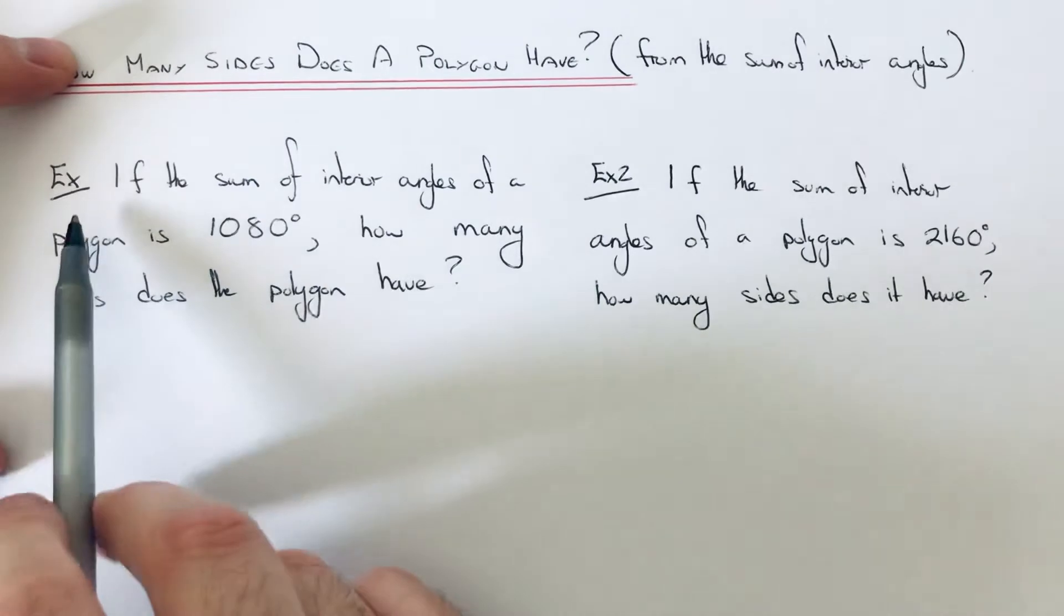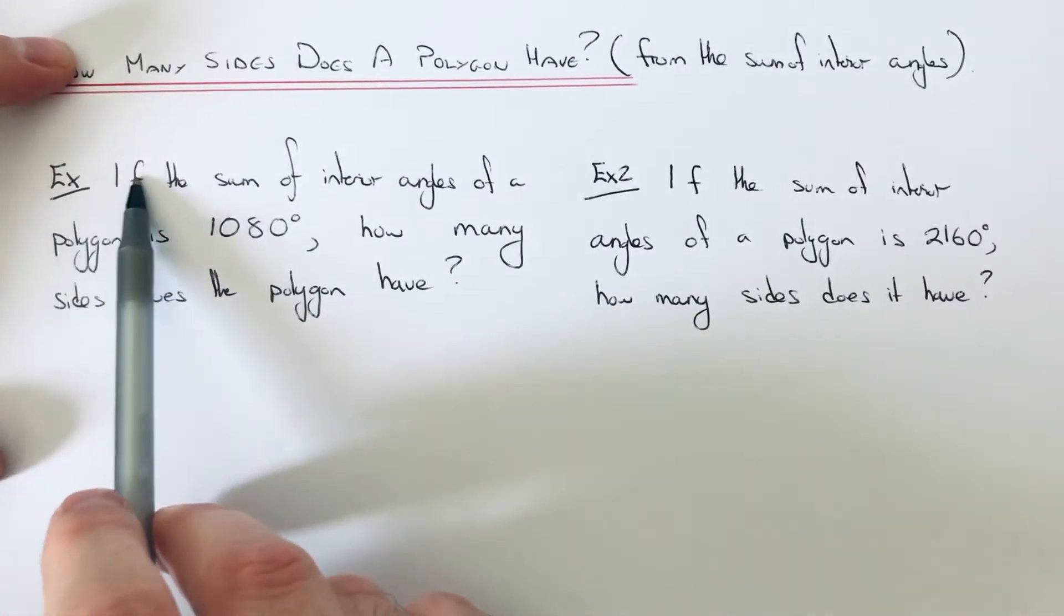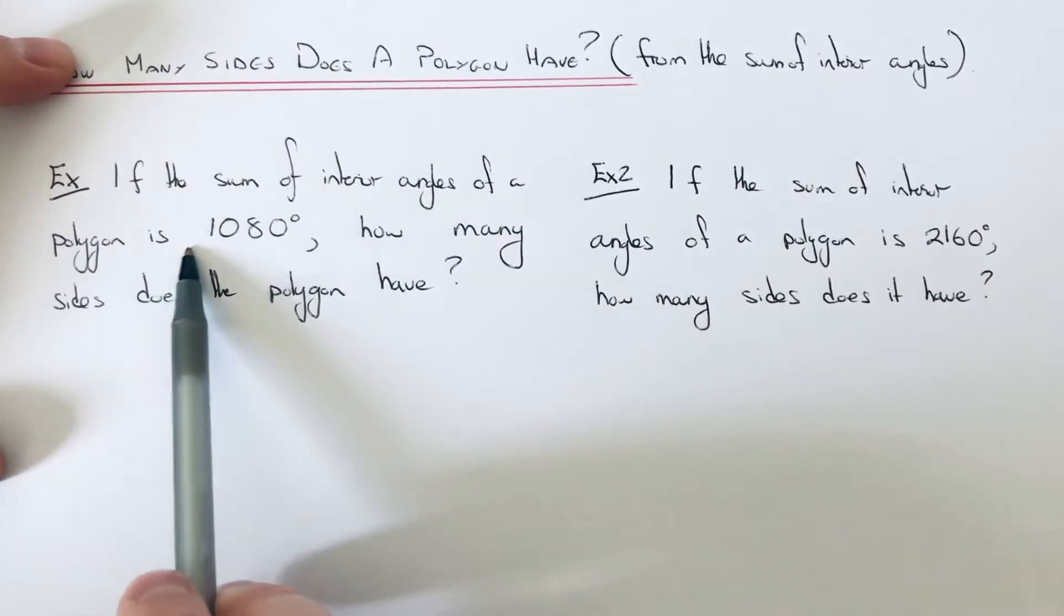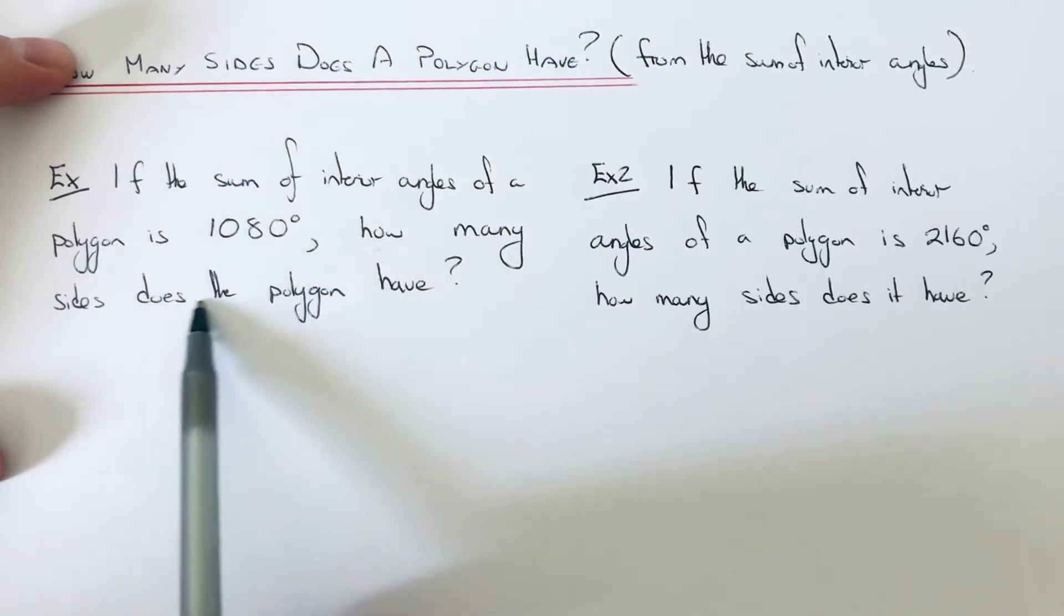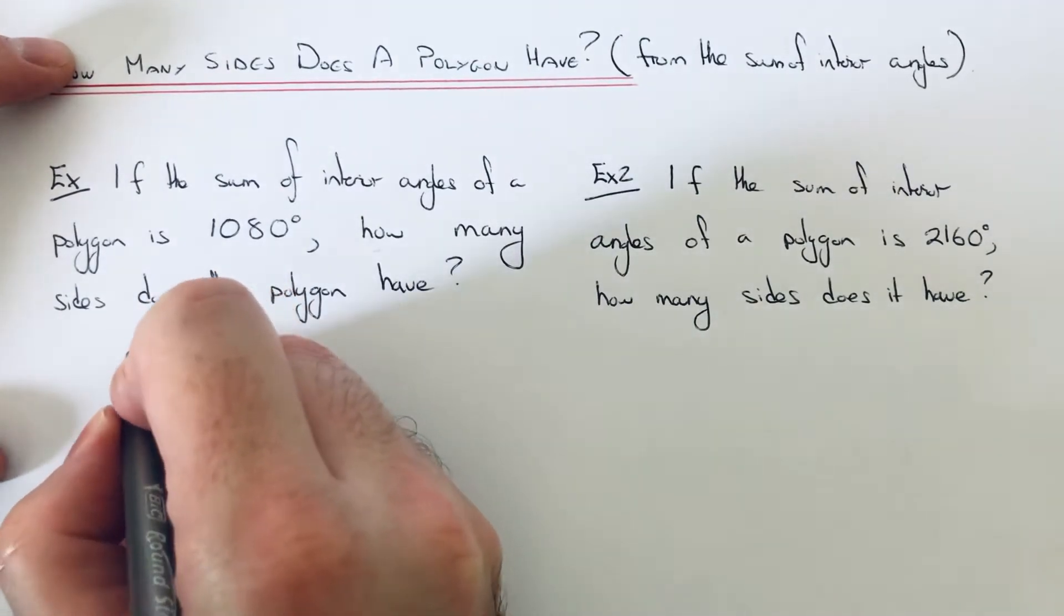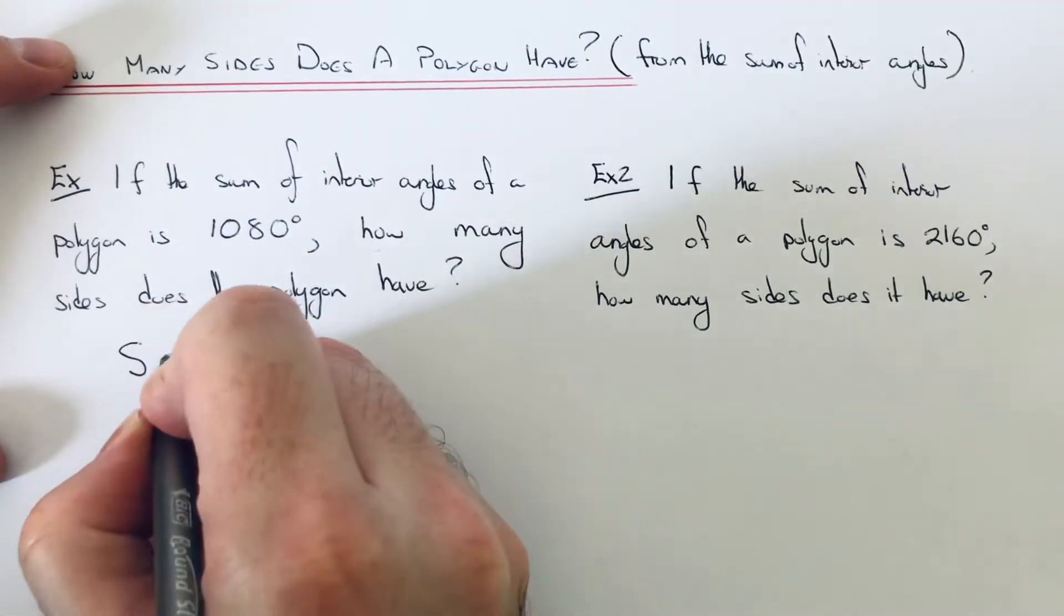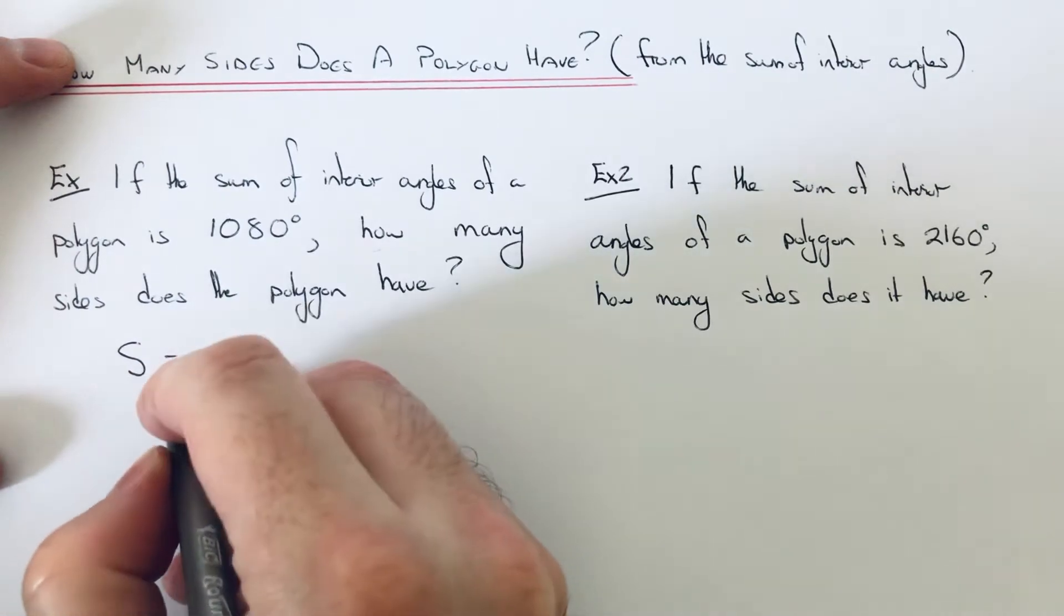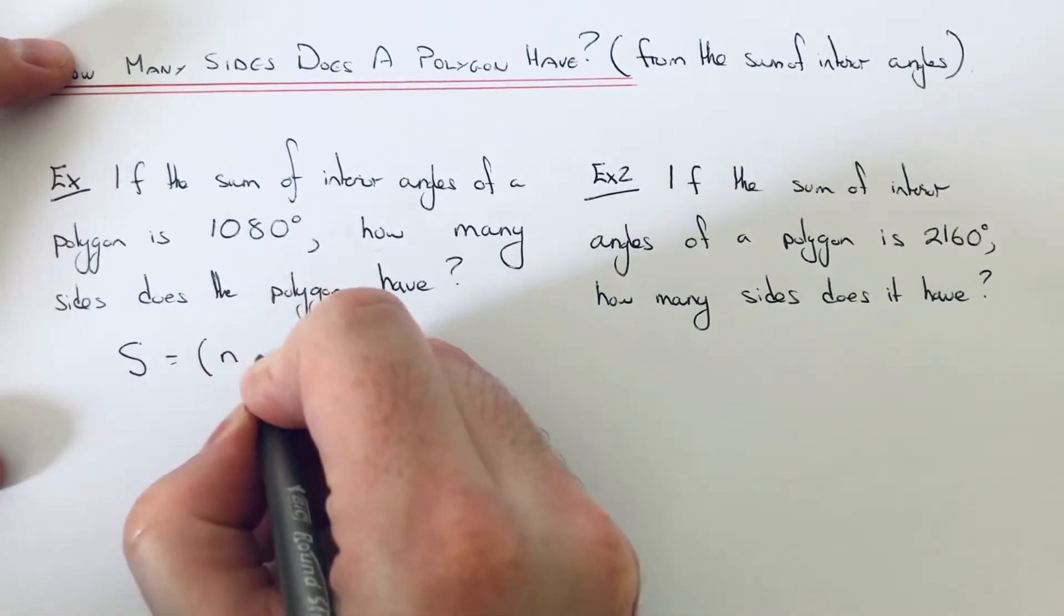Okay, so let's have a look at the examples here. If the sum of interior angles of a polygon is 1080 degrees, how many sides does the polygon have? To do this, we need to use the formula for the sum of interior angles. S stands for the sum of interior angles, and it's the number of sides take away 2 times 180.